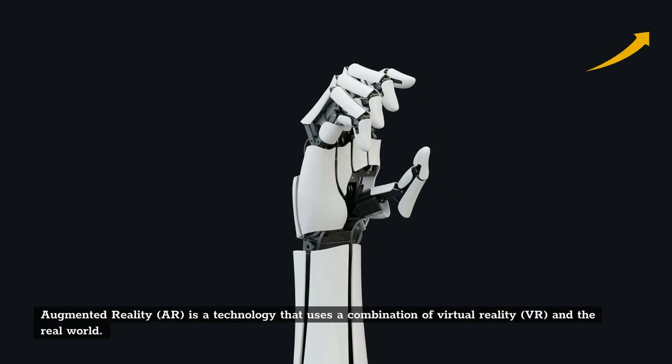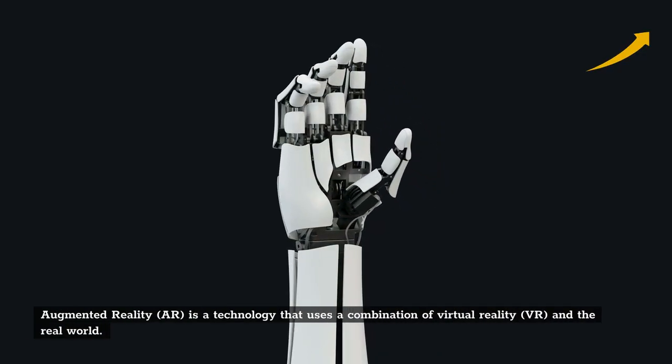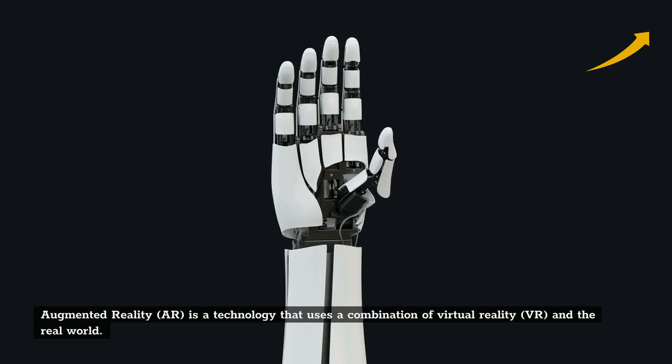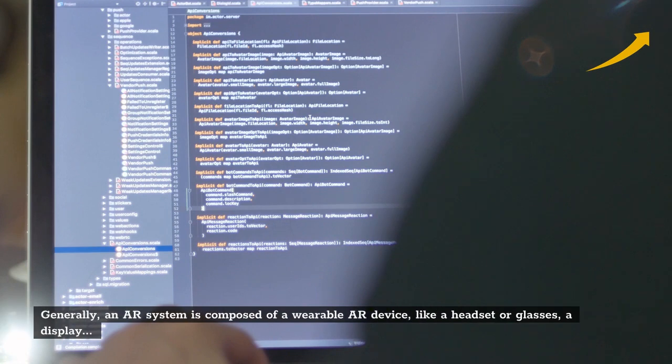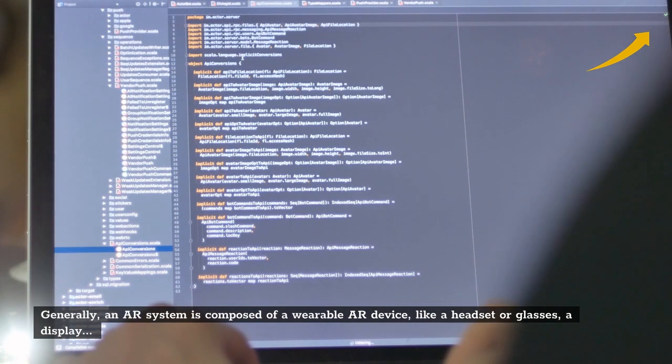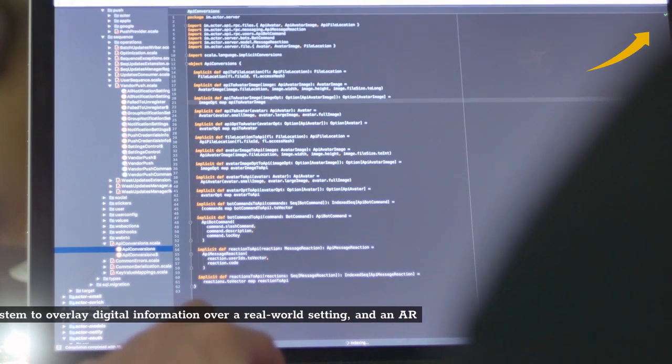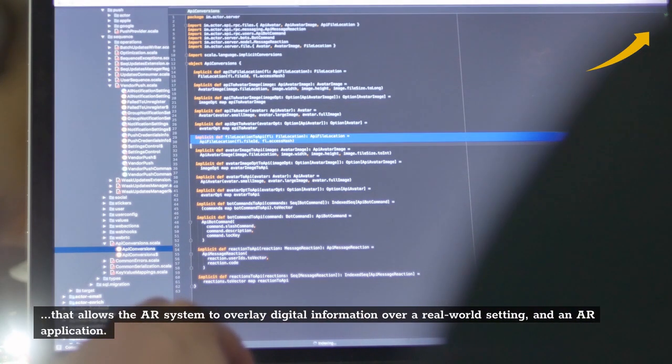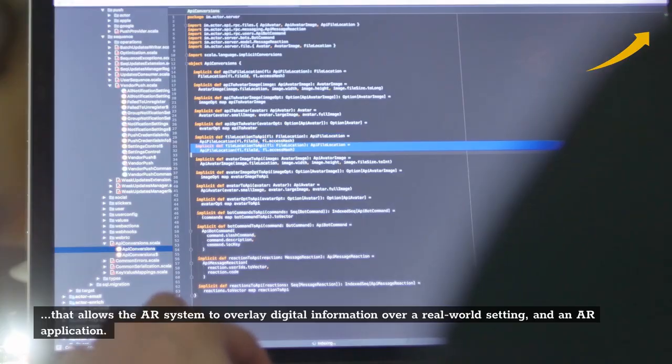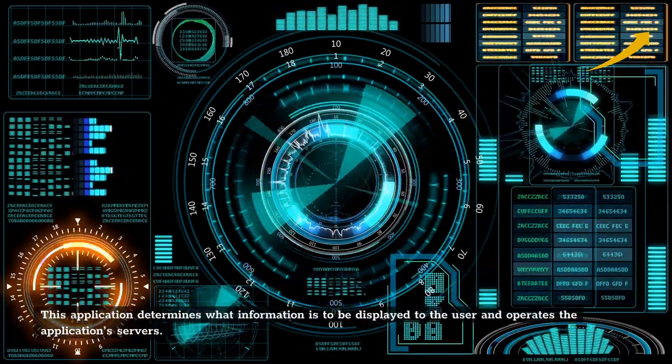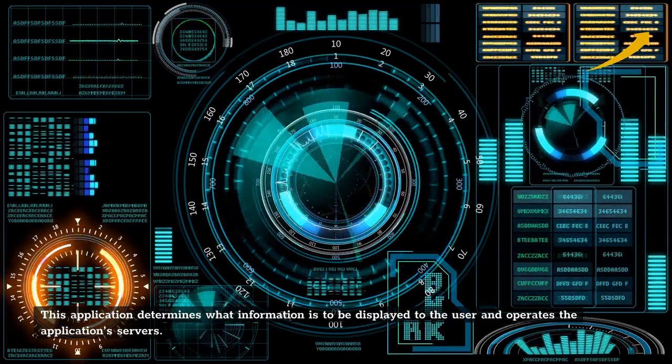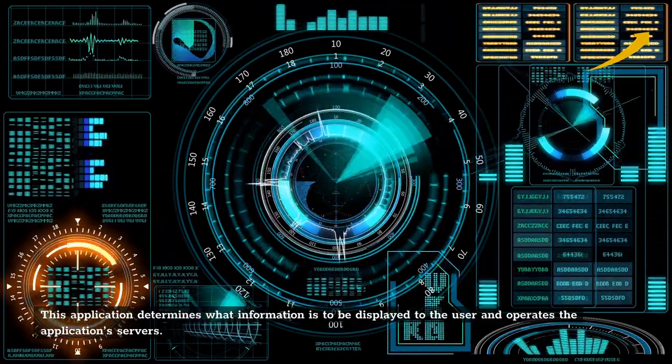Augmented reality, or AR, is a technology that uses a combination of virtual reality and the real world. Generally, an AR system is composed of a wearable AR device like a headset or glasses, a display that overlays digital information over a real-world setting, and an AR application that determines what information is displayed to the user.